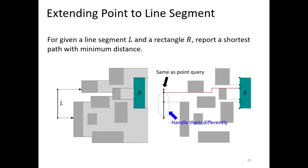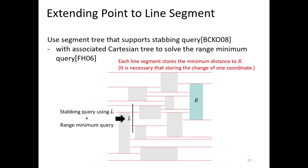Moreover, we extend the shortest path queries to between line segments and rectangles with minimum distance; for maximum distance it can be handled similarly. For a given line segment query L instead of point P, we handle the two endpoints of L similarly to the point-to-rectangle query. However, we handle interior points of L differently to reduce query time. The problem is reduced to a stabbing query and range-minimum query. There are two sets of axis-parallel line segments in the rectangular domain extending the sides of rectangles, each storing the minimum change of X or Y coordinate according to monotonicity. Our first purpose is to report parallel line segments intersected by L efficiently, which can be solved using a segment tree, yielding O(log N) nodes.